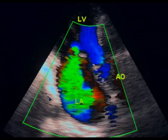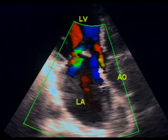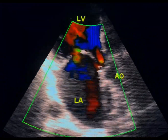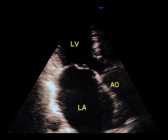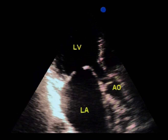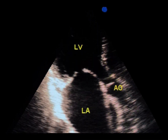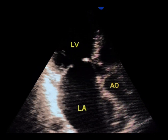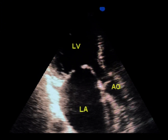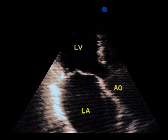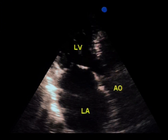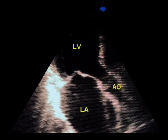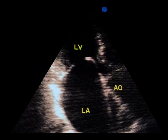Now let's look at this view of another patient with severe MR. Here, we see that the mitral valve leaflets are domed and exhibit restricted motion, which indicates primary mitral regurgitation due to rheumatic valve disease.